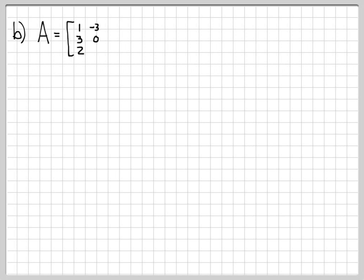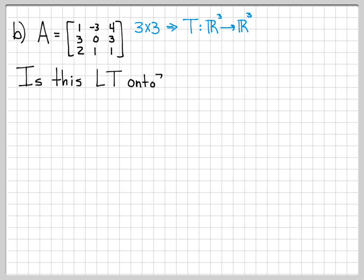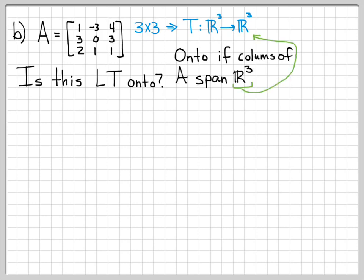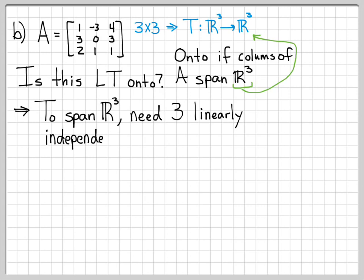Now let's look at another example — the same matrix as before, but with one element changed to 3. We ask the same question: is this an onto transformation? It still takes elements from R3 to R3, so we're asking whether the columns of A span R3, which requires determining if the three column vectors are linearly independent or dependent.